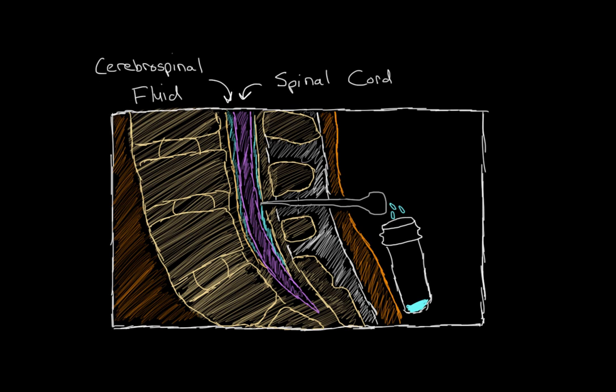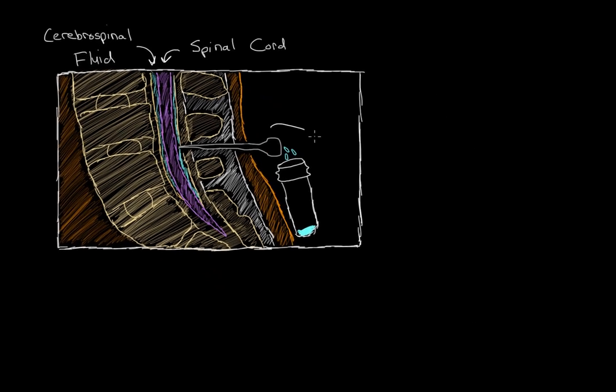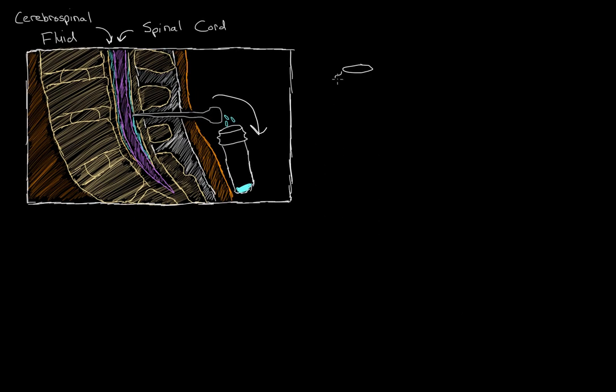The cerebrospinal fluid just bathes both the spine and your brain. It contains all sorts of good things like proteins and ions and all sorts of things that you need for the brain and spinal cord to work. So what we can do is we can actually extract that cerebrospinal fluid using this needle and collect it into this vial.